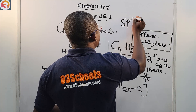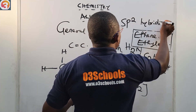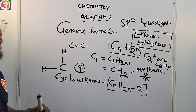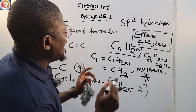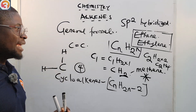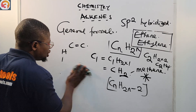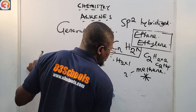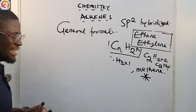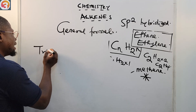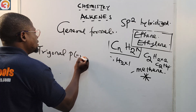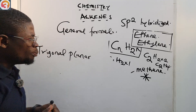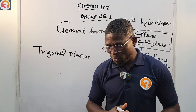What type of hybridization is found in alkenes? Alkenes are sp² hybridized — you must take note of that. Now, what about their shape? Alkanes are tetrahedral, but for alkenes they are trigonal planar. Take note of these, as they are common exam questions.